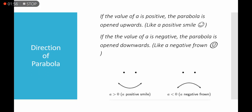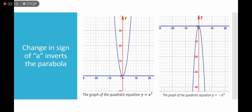If the value of a is positive, the parabola is open upwards like a positive smile. If the value of a is negative, the parabola is open downwards like a negative frown. Changing the sign of a inverts the parabola. For example, y = x² has a = 1 and opens upward, while y = -x² has a = -1 and is inverted.